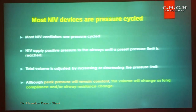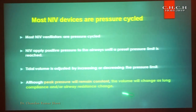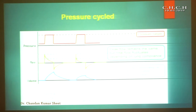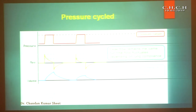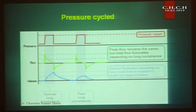Most NIV devices are pressure cycled, meaning inspiration and expiration have two fixed pressures that the machine delivers to provide the tidal volume. However, depending on the patient's lung compliance and airway resistance, the peak pressure is always fixed but the compliance and the delivered volume will change. In a normal lung the volume is high, while in poor lung compliance the volume is decreased, but the peak pressure remains the same.